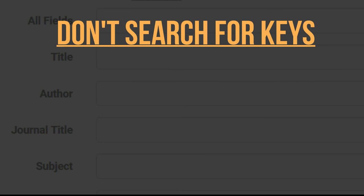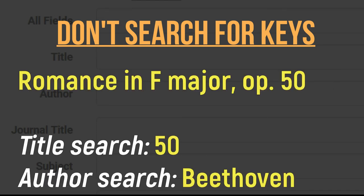Don't enter the key of a piece in your search unless it's the only identifier you have to distinguish it. Again, because the score may be German and have 'F-Dur,' not 'F major,' or 'F majeure' if it's a French edition. Use the opus or thematic catalog number instead.